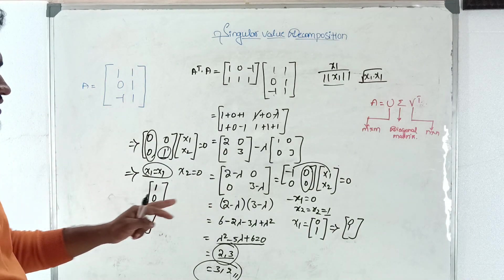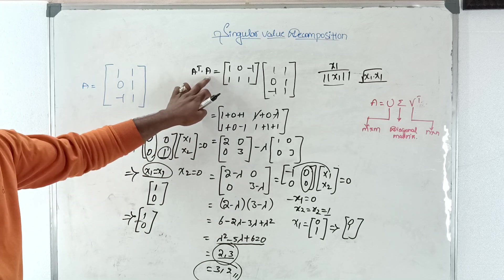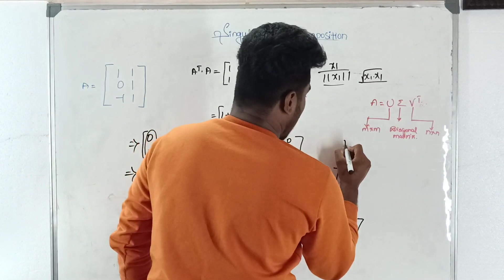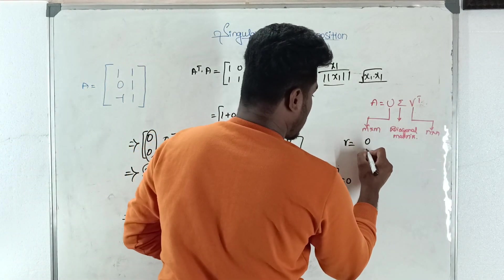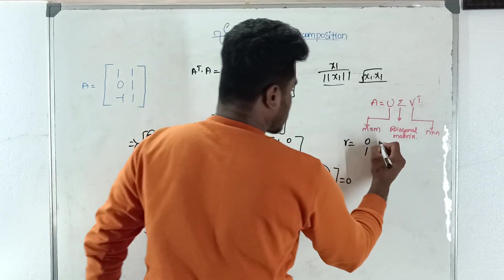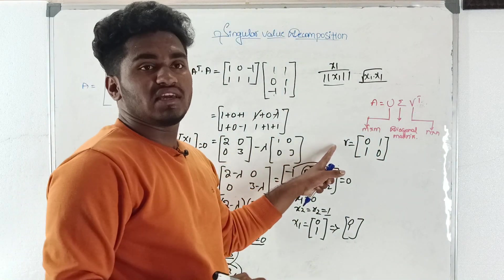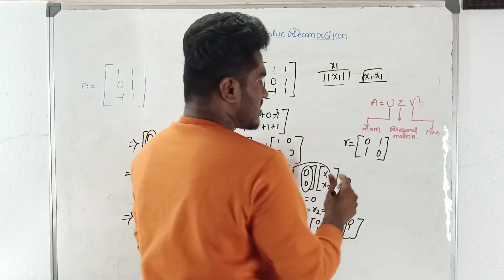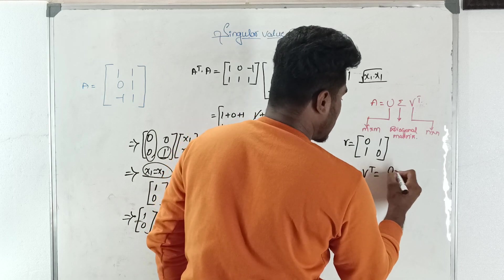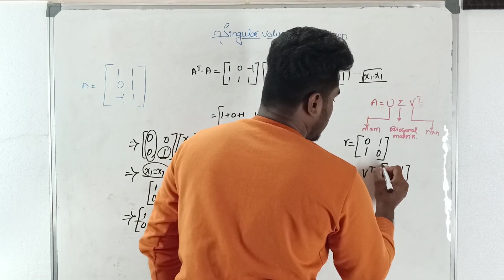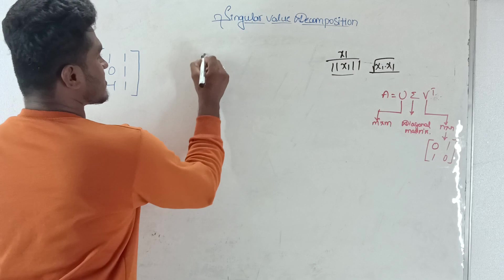As discussed in the last video, the V matrix is formed by the eigenvectors of A transpose A. So V = [[0, 1], [1, 0]]. Since this is a symmetric matrix, V transpose equals V, giving V transpose = [[0, 1], [1, 0]].